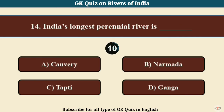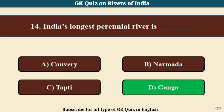Question No. 14. India's longest perennial river is? Answer D: Ganga.